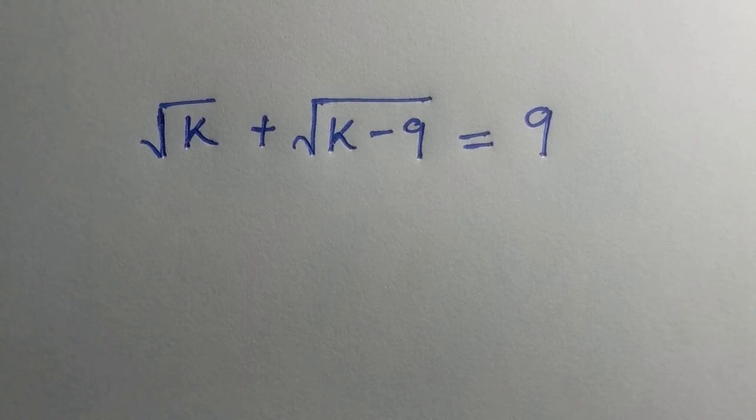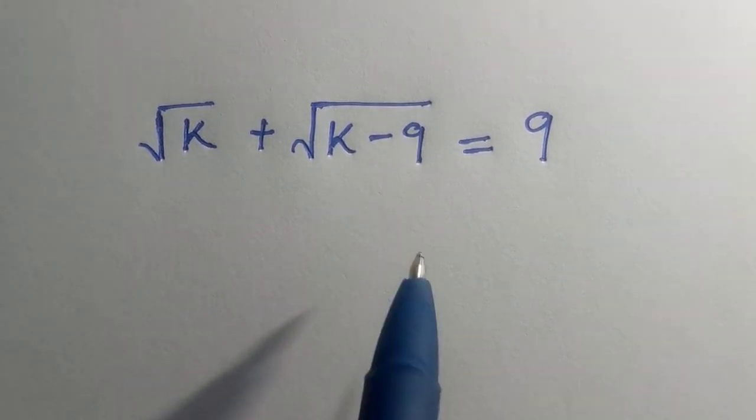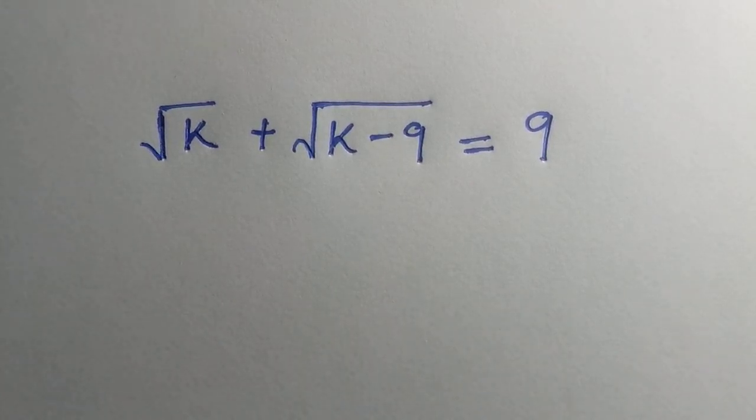How to find the value of k, given that square root of k plus square root of k minus 9 equals 9.